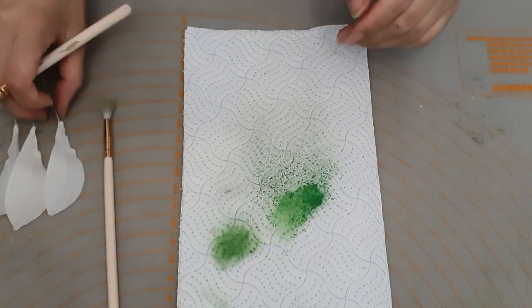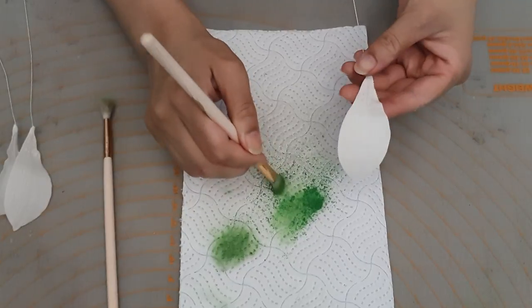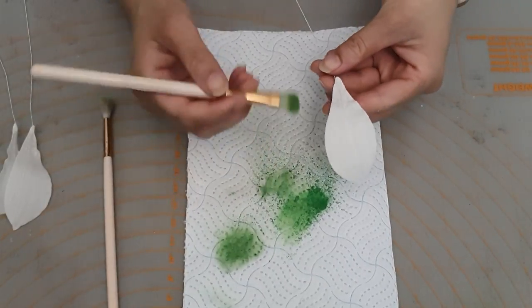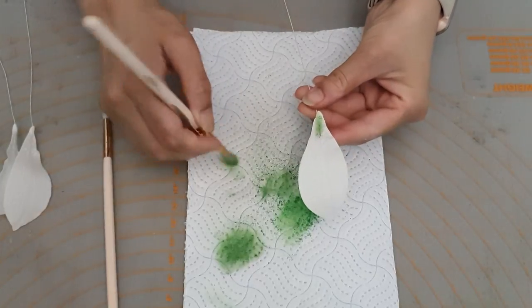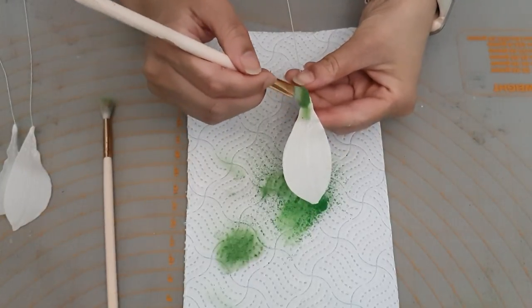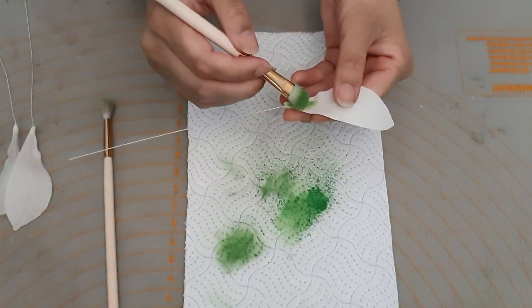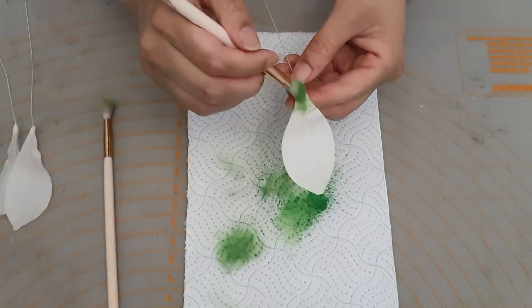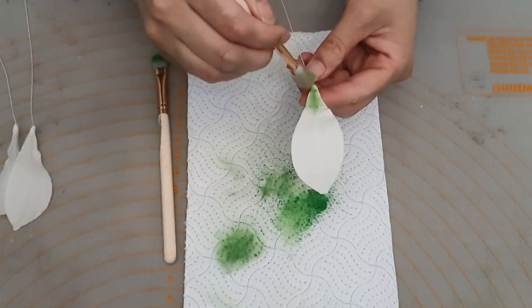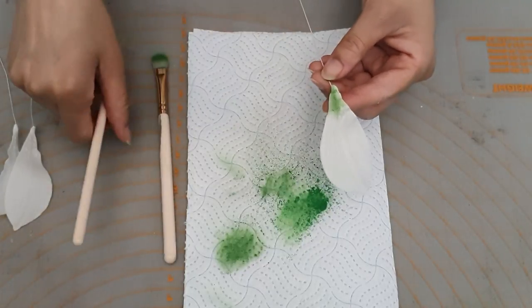So once you've done the centers, it's now time to move onto the petals, which we're just going to use the spring green only. And we're just going to dust the bottom little bits. Just like that. And get rid of the excess. And that's all we're going to do.